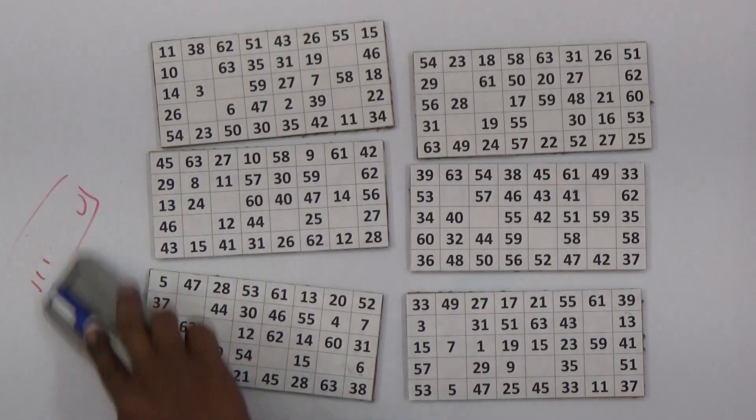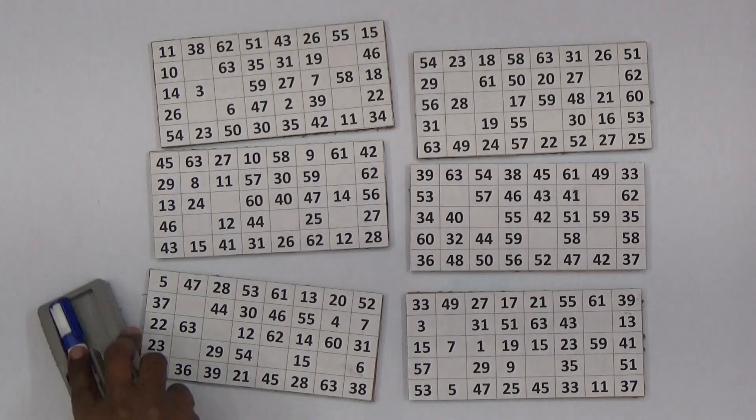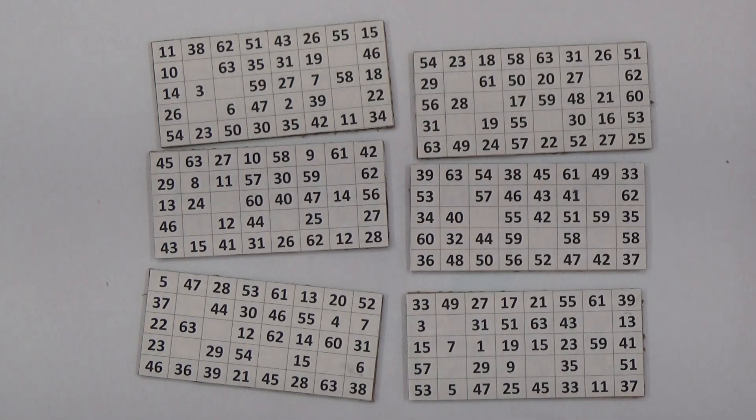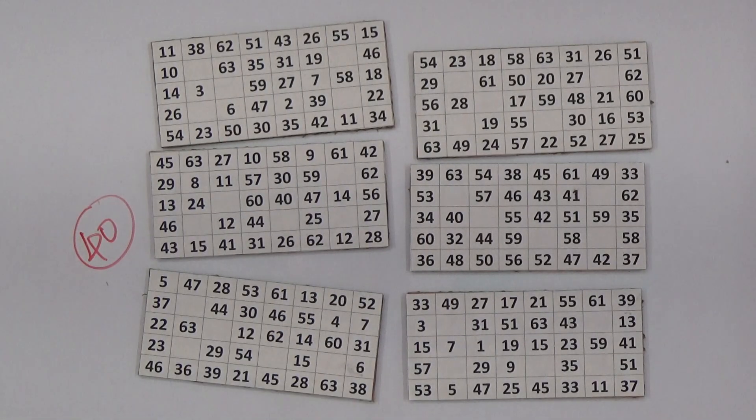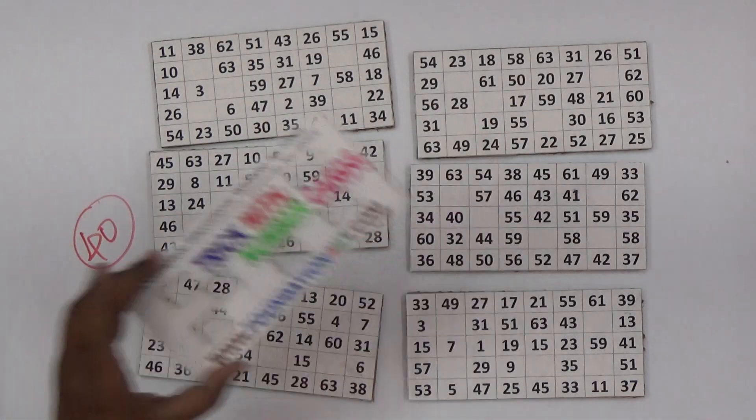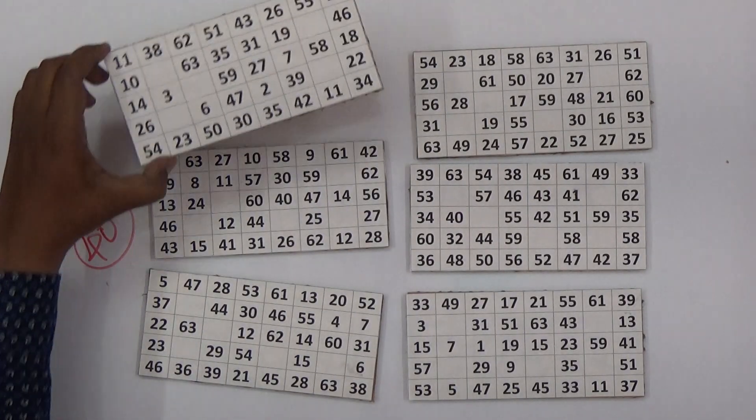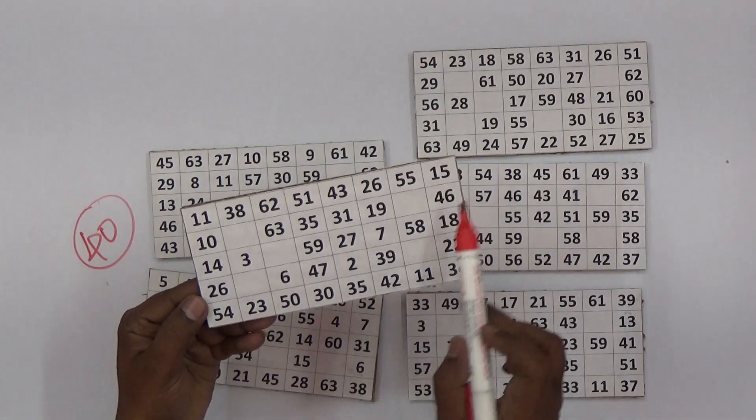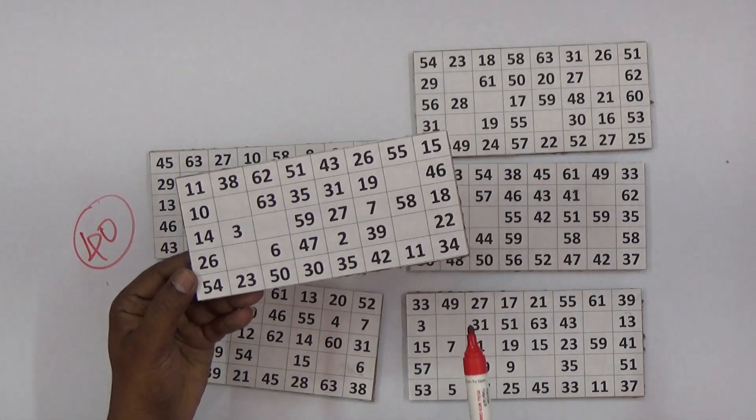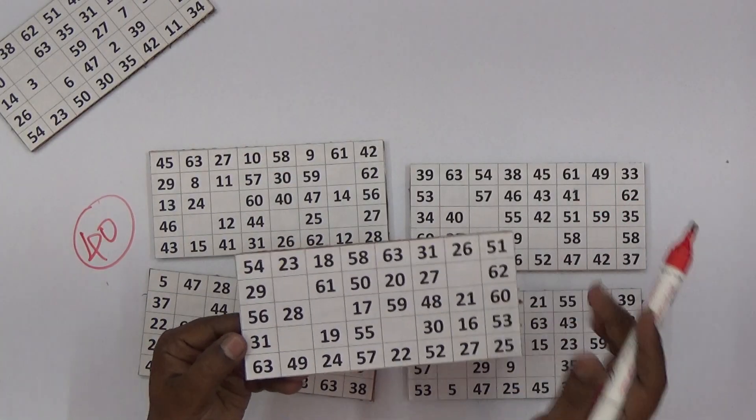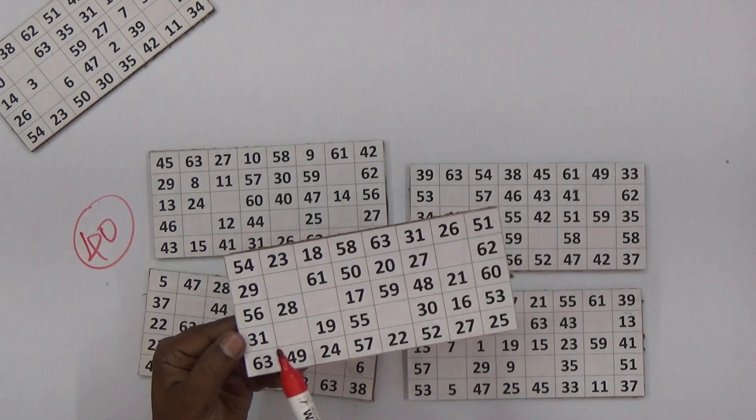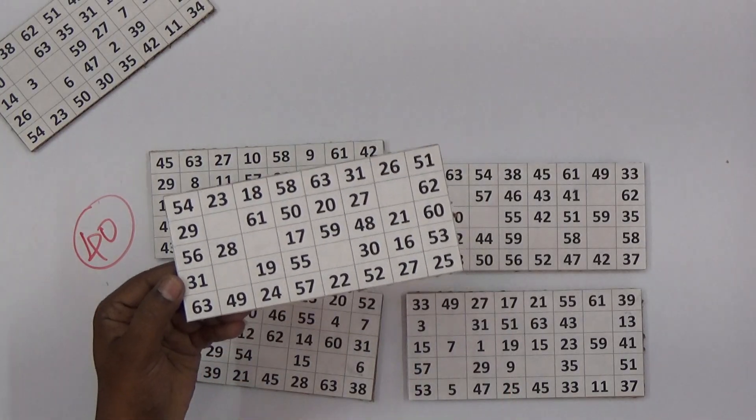Let me test with one more number to see if this works or not. For example, I have taken 40. Now let's see if 40 will come with this total sum or not. Observe in these six cards. 40 is not in this, keep it aside. If you observe in this card, 40 is not in this.